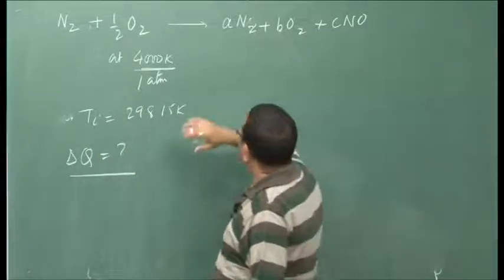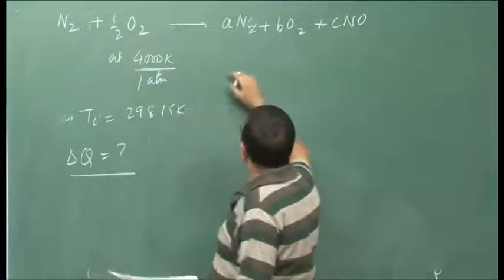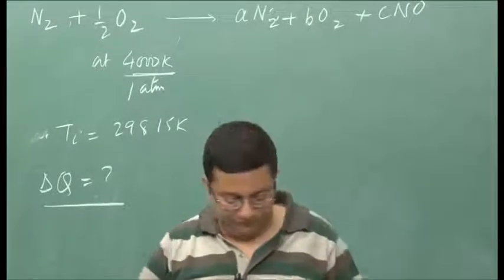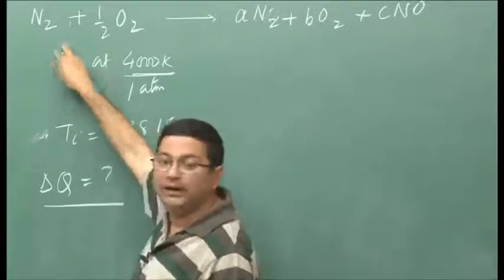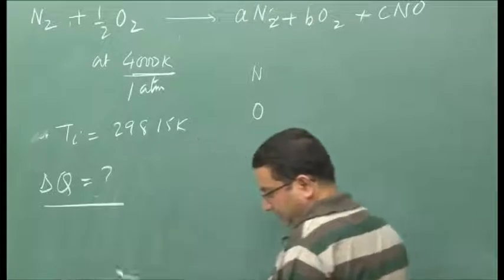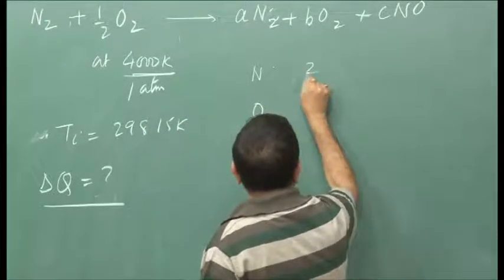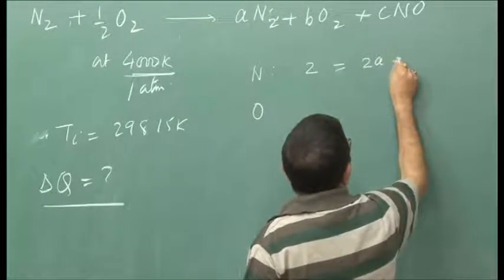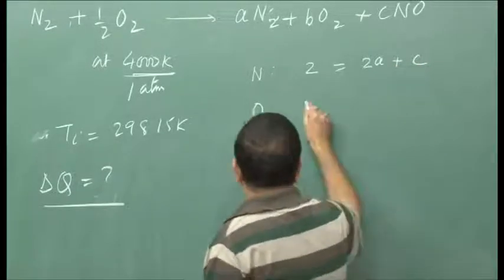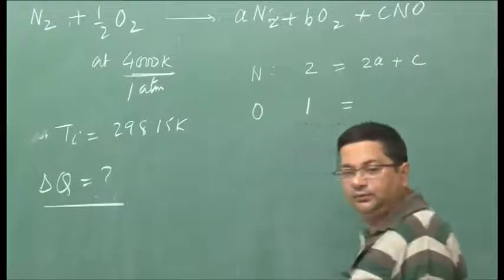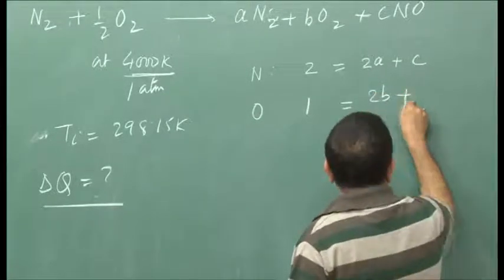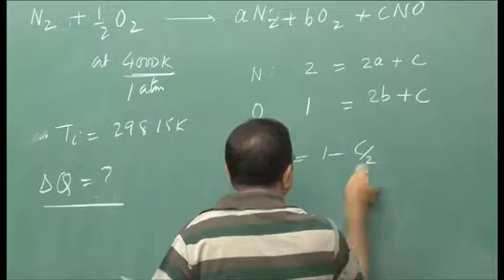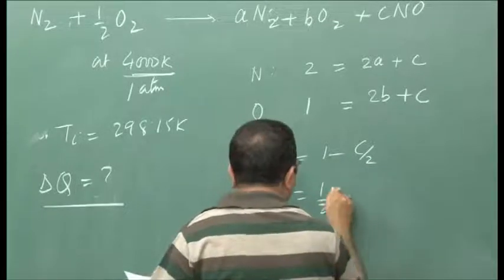For this problem, let us look at what is known to us. We want to estimate A, B, and C — the final composition. First we do the atomic species balance. We have two species: nitrogen and oxygen. In the reactant side we have two atoms of nitrogen, equal to 2A + C in the product. For oxygen, one atom in the reactant side equals 2B + C. Simplifying, A = 1 − C/2 and B = 1/2 − C/2. At equilibrium, if we can estimate C, we know the final product composition.